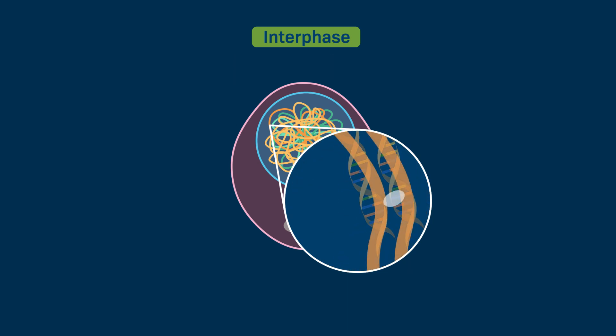After DNA replication, each chromosome consists of two identical double-stranded DNA molecules, which are called chromatids. The chromatids are attached at a condensed region of the chromosome called the centromere. The two identical DNA molecules remain attached to each other until they separate during mitosis.